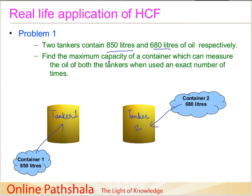What we want to do is find out the maximum capacity of another container which can measure the oil of both tankers when used an exact number of times. Those wordings are a bit jumbled, so we need to simplify. Essentially, we want to find a third tanker that can measure the oil in both tankers equally — meaning nothing should be left over — and it should be of maximum capacity.